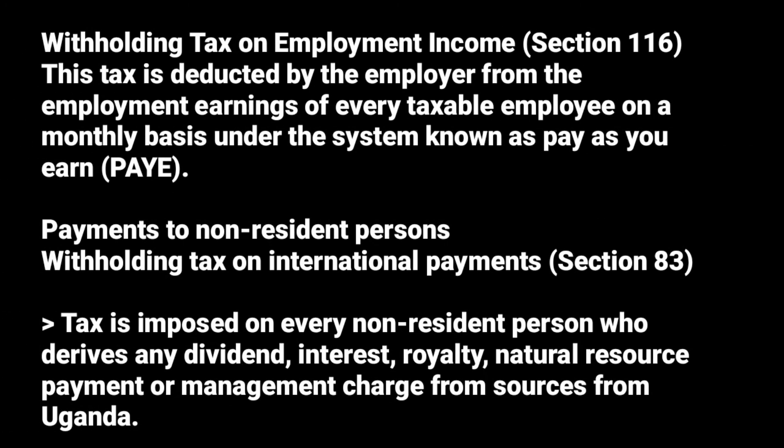Let's look at withholding tax on employment income. According to Section 116, this tax is deducted by the employer from the employment earnings of every taxable employee on a monthly basis under the system known as Pay As You Earn (PAYE). Any employee that earns an amount above 235,000 per month is supposed to pay PAYE, and the employer has an obligation to withhold that tax and remit it to URA.